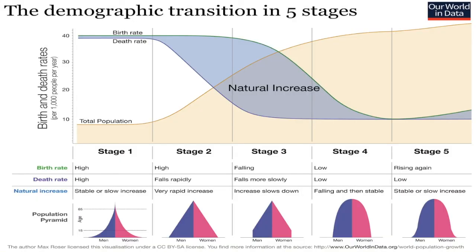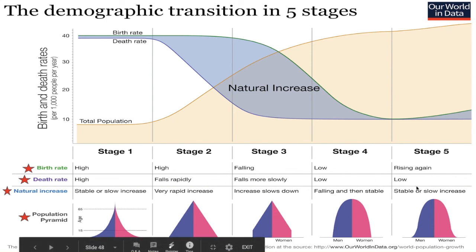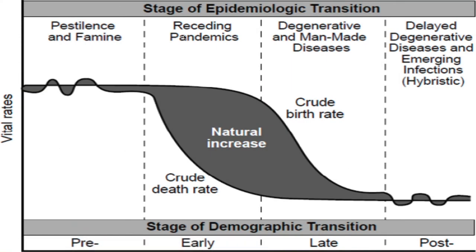So the demographic transition in five stages — I just want to make sure that what we understand is that as we move left to right, there are three big changes happening. That birth rate is high and then it drops. That death rate is very high and then it drops. The total population or natural increase starts very low, starts to balloon, and then kind of flattens out. And we can match that up with the shapes of these different population pyramids. This is just a measure of development. We're looking at a lot of different things on this one chart, and we can start to match it up with what we call the epidemiologic transition model — in other words, what kills people in that society?